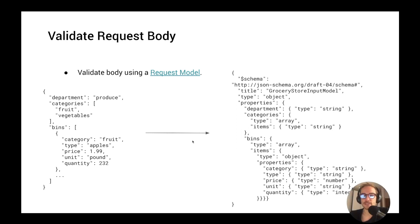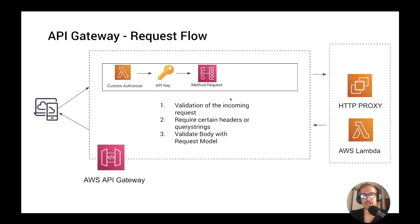In this way, you can validate the body of your API request. We've seen how to validate query strings, headers, and body. To summarize the key takeaways from this method request step: it is primarily used for validation of the incoming request, so your integration server knows what to expect. You can set required headers and query strings, and you can validate the body using a request model, which is basically a JSON schema file. I would suggest implementing this method request step because you will have a more consistent request presented to your integration step.